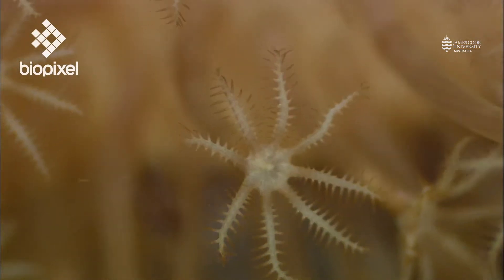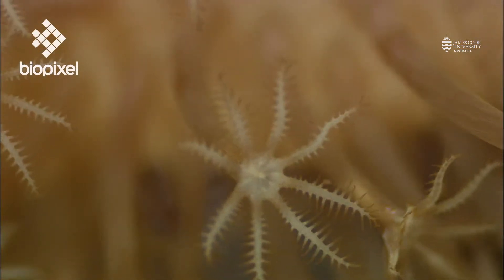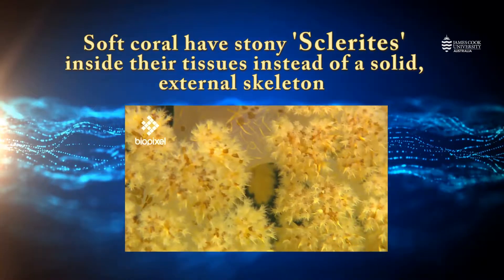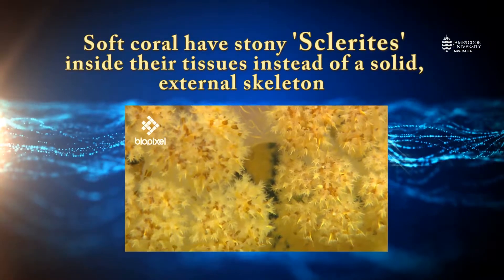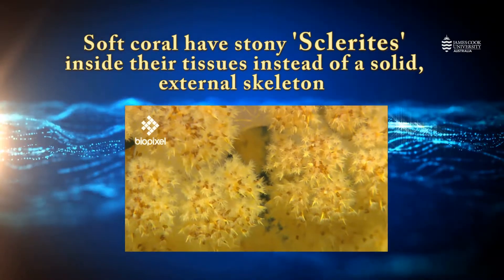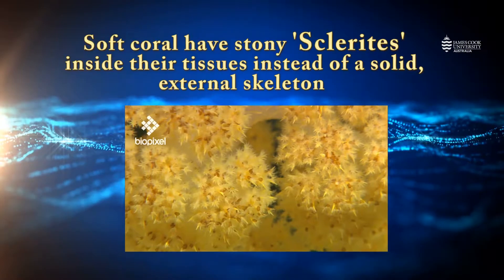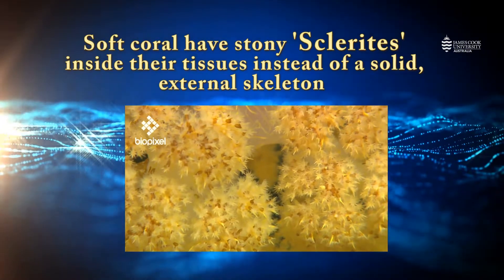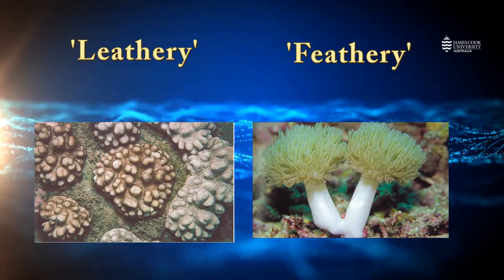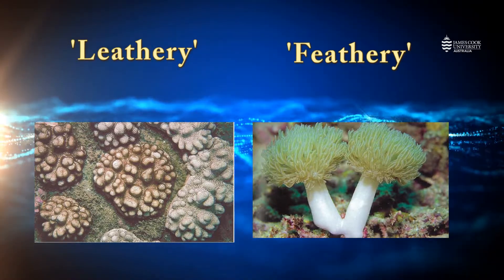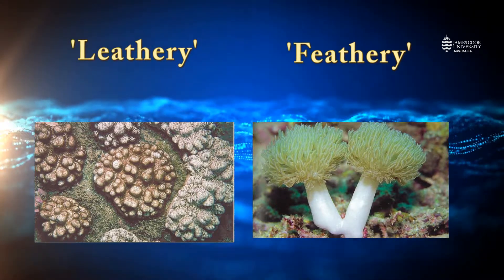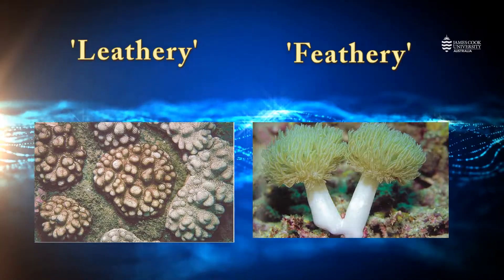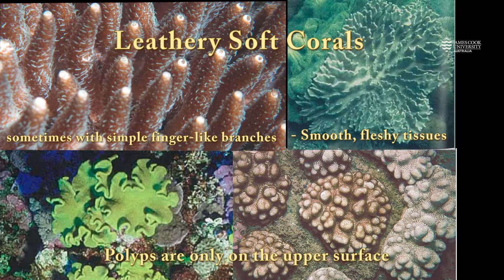Here you can see the eight tentacles in this one polyp. Another key difference between soft corals and hard corals is that they have stony sclerites, which are little chunks of calcium carbonate within their tissue. We can break them up into two broad groups: leathery and feathery soft corals.